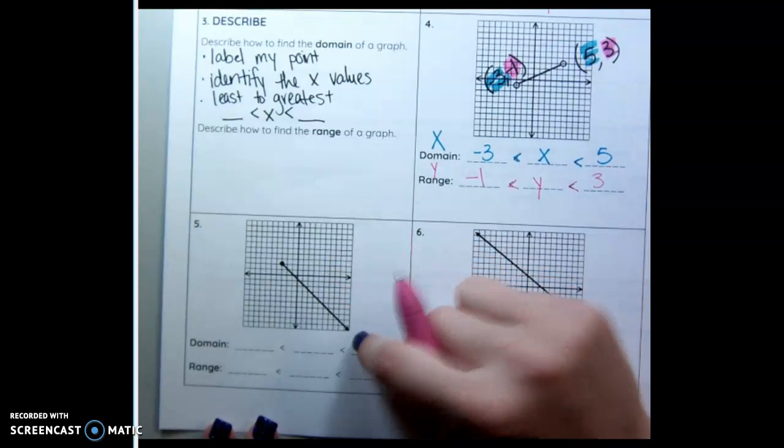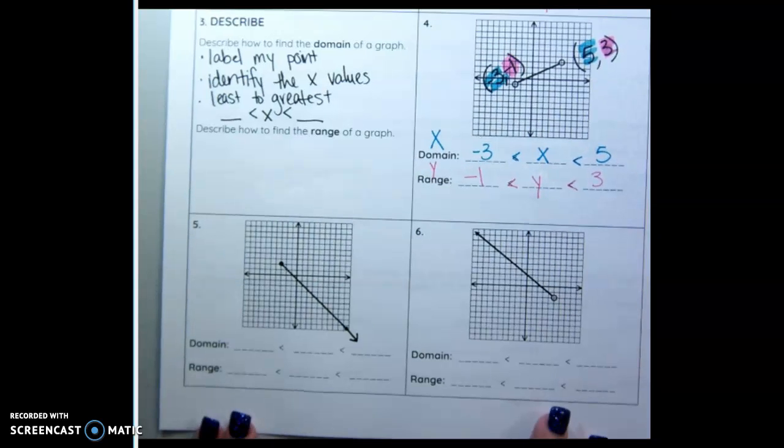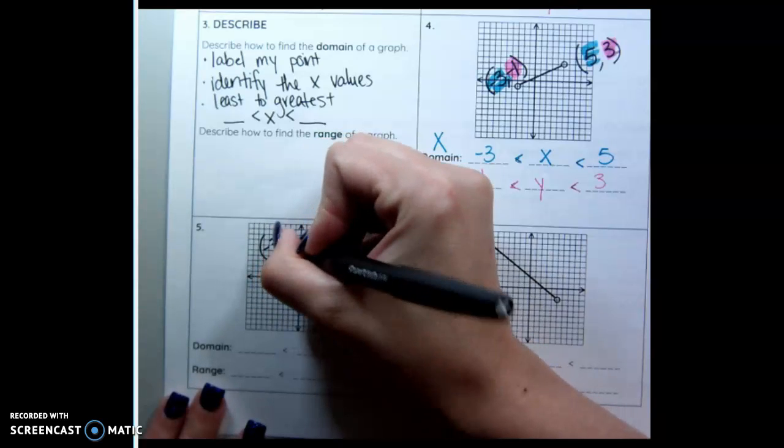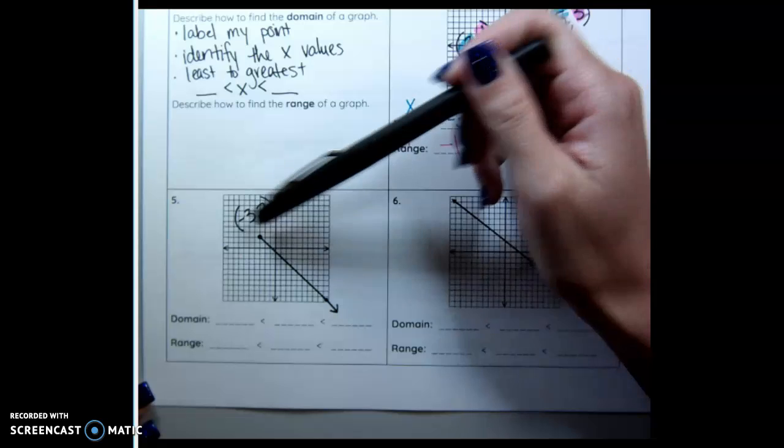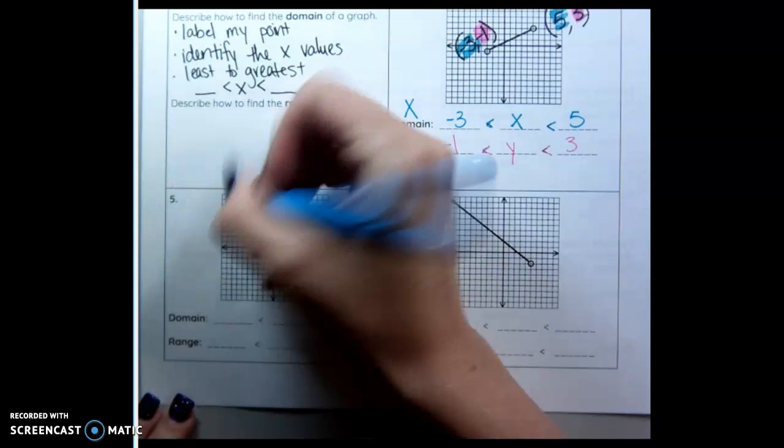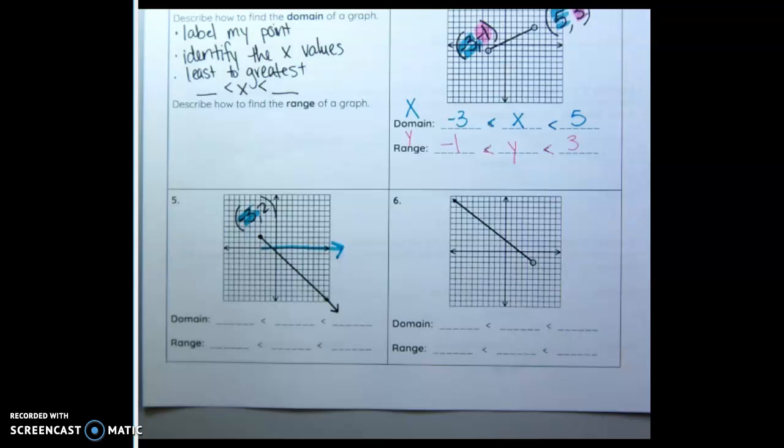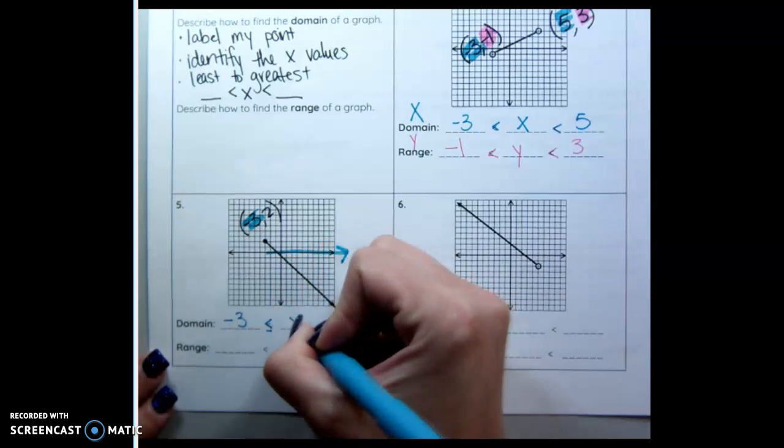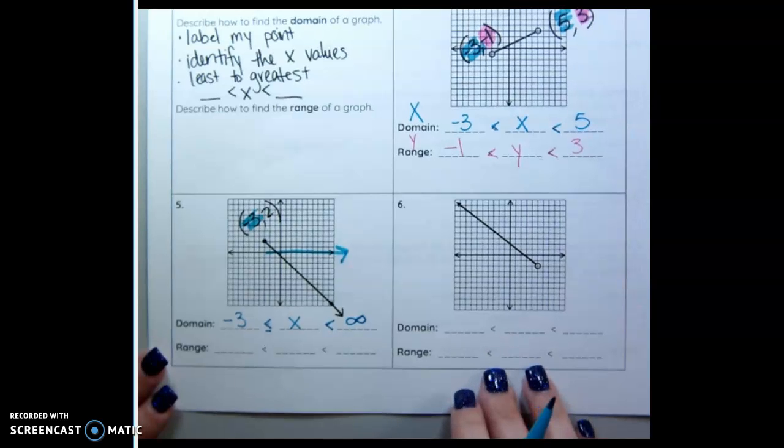Number 5 is a little different because this goes on forever. It does not stop at 10. It keeps going past that. Forever and ever. So I'm going to label the one point that I do have. I had to stop for a second. So my point is negative 3, 2. And this goes on forever. So I'm still going to highlight my one x value that I have. And then it goes forever this way. So if it's increasing, that is a positive value forever. So the lowest it can go is negative 3. It's a closed in dot. This is an x. You cannot contain infinity. If it goes on forever, it's infinity. Like Buzz Lightyear.